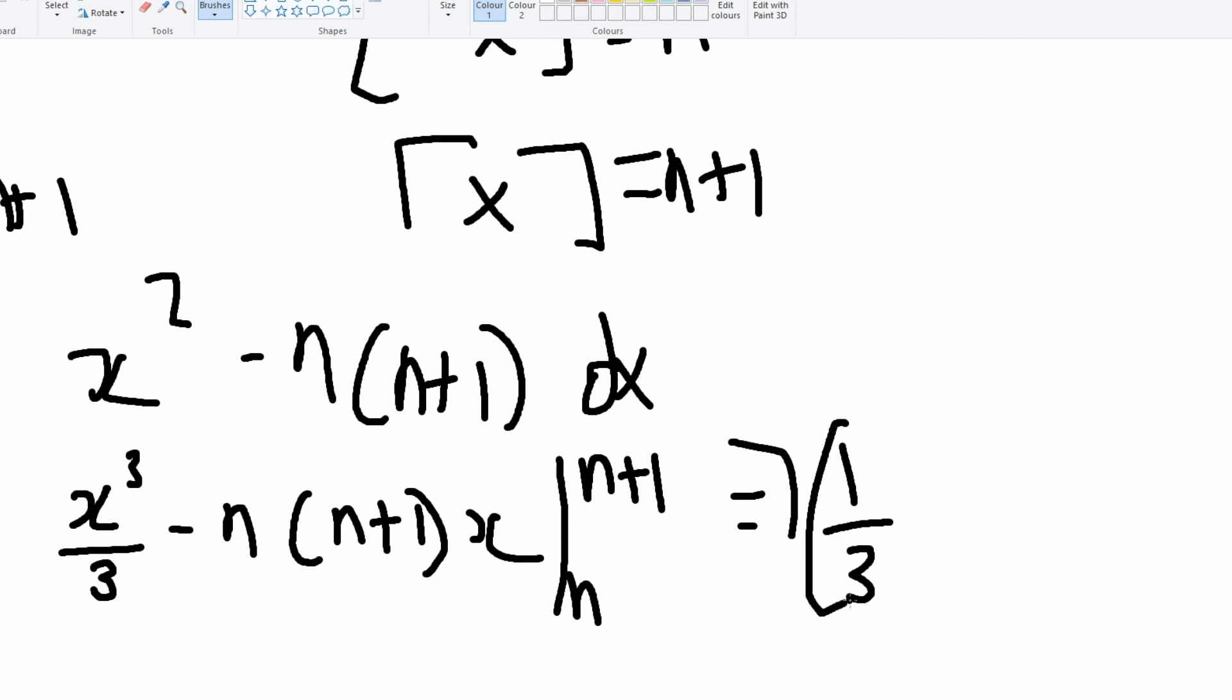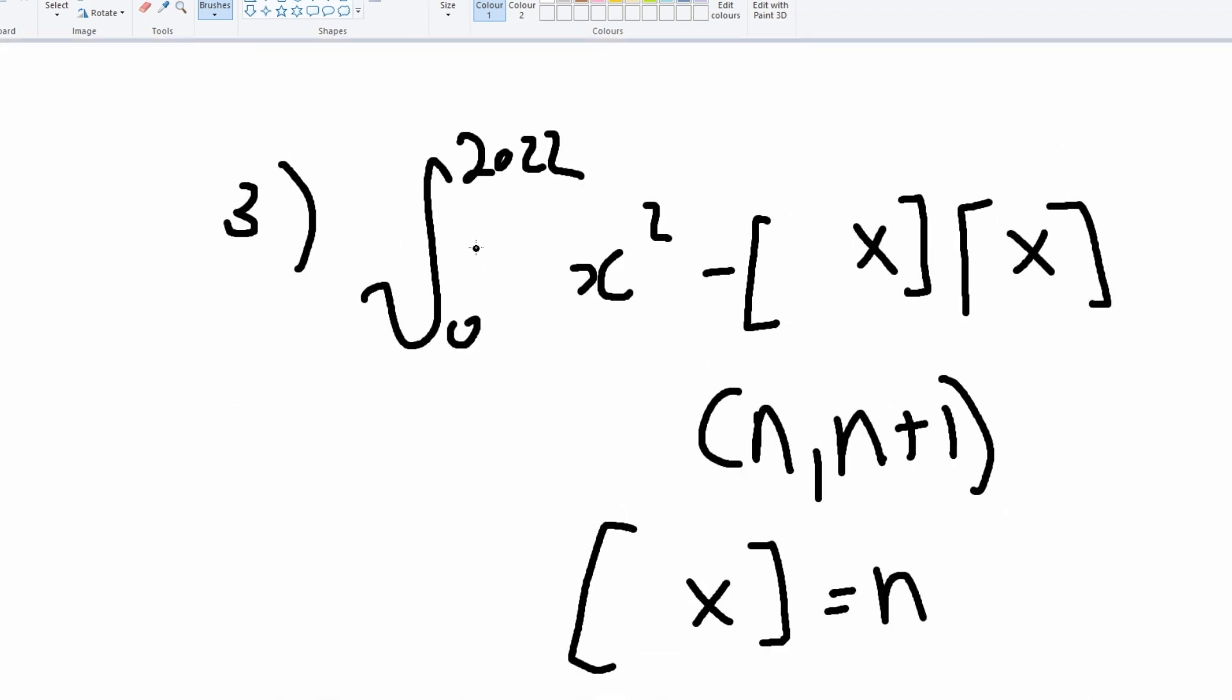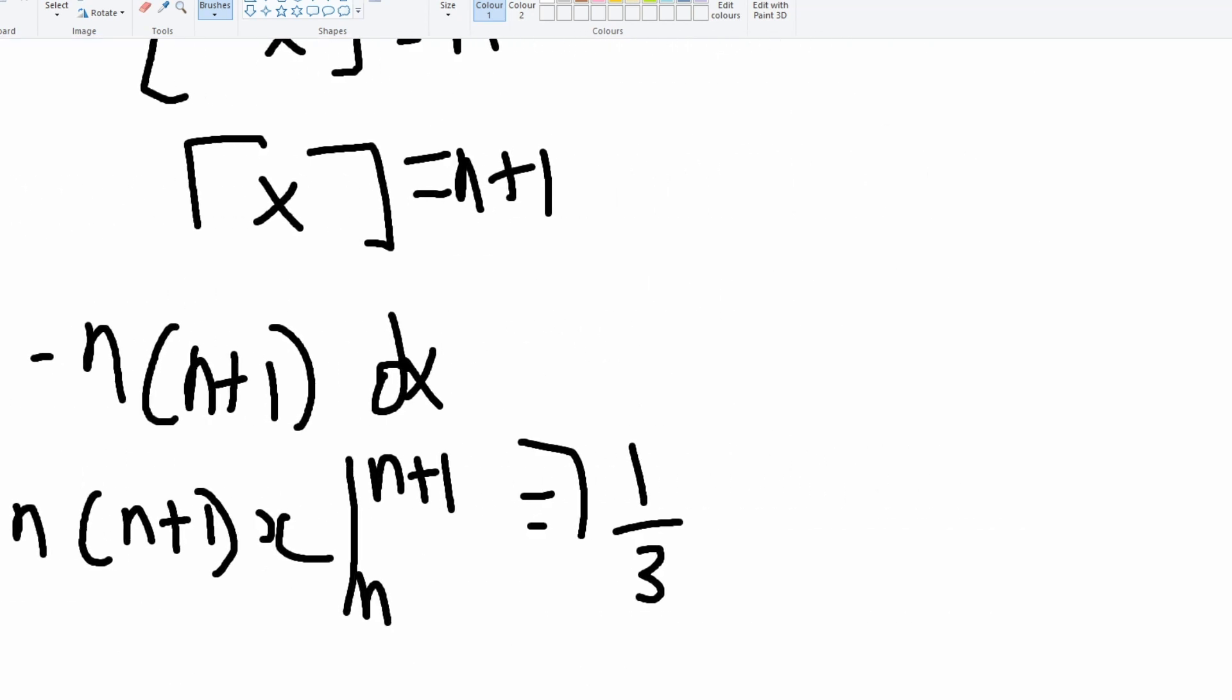Now after that, that's our constant right here. And since we are evaluating from zero to 2022, that means there are 2022 intervals of the area one over three. So all we'll have to do is just times 2022 times one third, which simplified will just give us 674. That's the first question done.